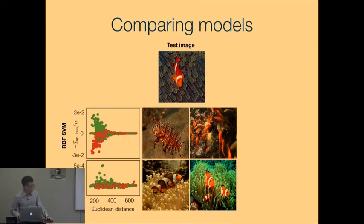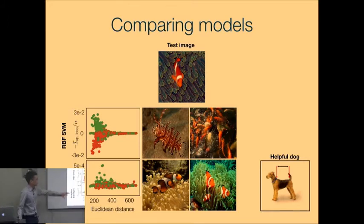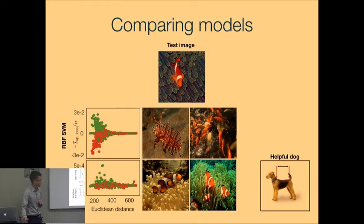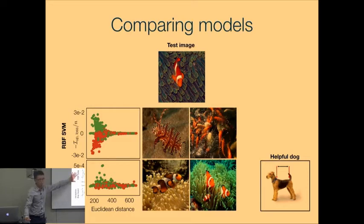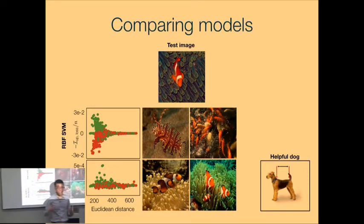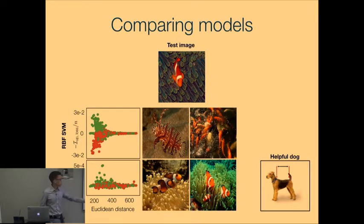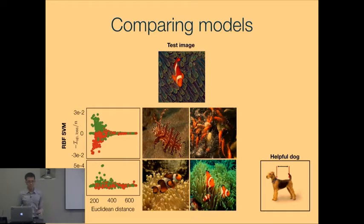Another interesting difference is that we found some weird examples where, since this is a classification task where half the images are fish and half are dogs, we found some images of dogs that look so different from the test image that their presence actually helped the neural net do the correct classification. Whereas we didn't really find this in the SVM trained on pixels, because that's more of a nearest-neighbor thing and these two things are so far away they have basically zero influence in the RBF case. But in the neural net's case, they are so different that the presence of this dog is actually quite helpful for the model.